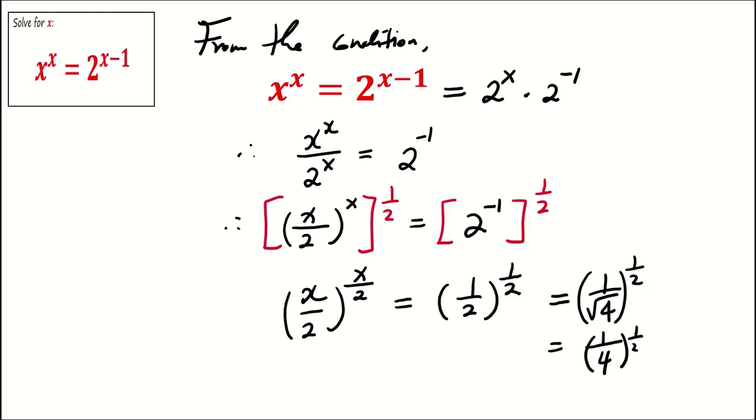Note that 2 is square root of 4, which means that 2 equals 4 to power of half. Simplify the left hand side to give 1 over 4 to the power of 1 over 4.